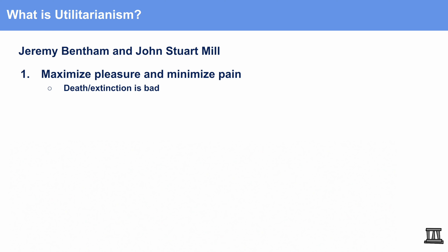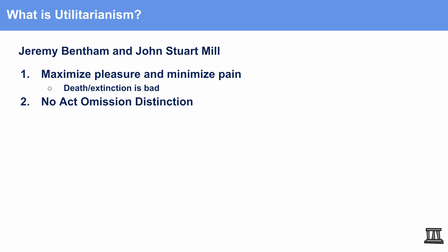Utilitarianism says that death and extinction are really bad because if you die, that means you maximize pain. So essentially, we should prevent pain, and we should prevent death or extinction because in and of itself, it causes the most amount of pain possible. On the other hand, compared to Kant, utilitarianism says that there is no act-omission distinction.